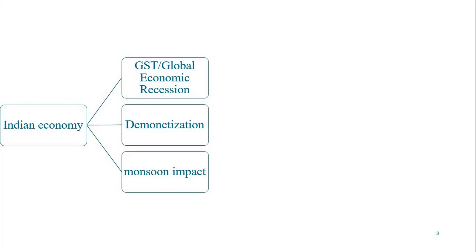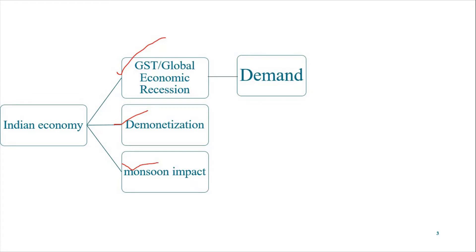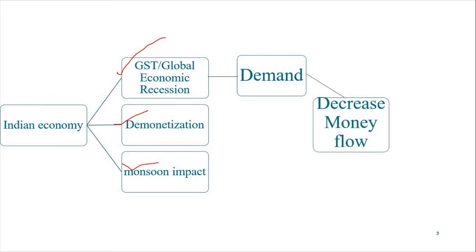Why is India's economy slowing down these days? Understanding this will help you understand the relevance of elasticity. There are three reasons behind this economic slowdown: GST, demonetization, and monsoon impact. After the trade war began and GST was introduced in India, there was a decrease in demand as tax rates increased and people were not aware about it, so they decreased demand for products, leading to decreased monetary flow.